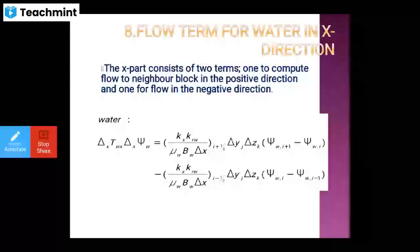Then flow term for y direction: similarly, the y part consists of two terms — one to compute the flow to the neighbor block in the positive direction, and the other for flow in the negative direction. Similarly for the flow term for water in z direction: the z part consists of two terms — one to compute the flow to the neighbor block in the positive direction and one for flow in the negative direction. So: delta_z(T_wz · delta_z · phi_w) equals this equation in the positive direction and one for flow in the negative direction. This is the z part for calculating water in the z direction.